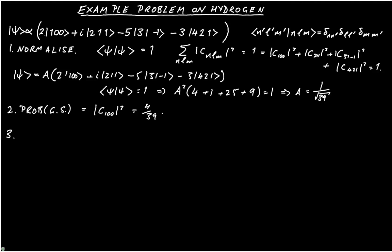The third question that we are going to tackle is the expectation value of L_z. And we write this as ⟨ψ|L_z|ψ⟩, which can also be written as the sum over N, L, and M of the square modulus of C.